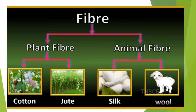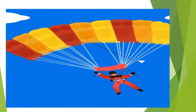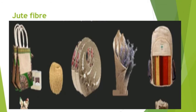Do you know how cloth and ropes are made? Fibre is a material obtained from both plants and animals. Cotton and jute are fibres got from plants. Wool and silk are fibres obtained from animals. The fruit from the coconut tree gives coir, and many things are made from it. The jute fibre is long, shiny and strong — we can make jute bags, jute baskets, etc.